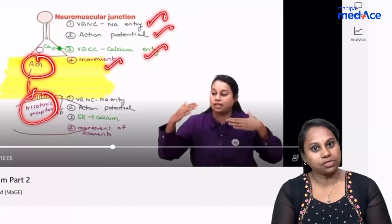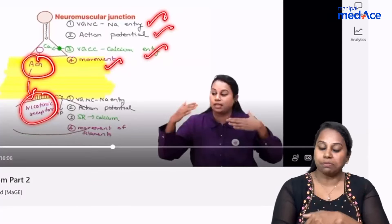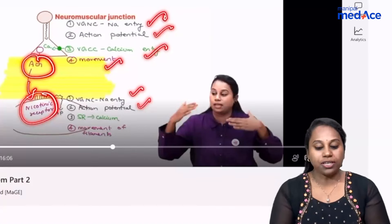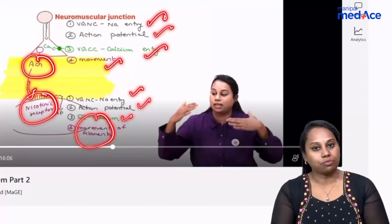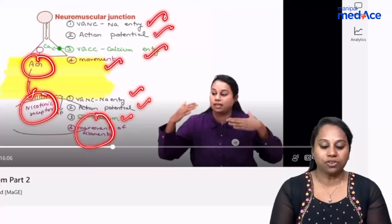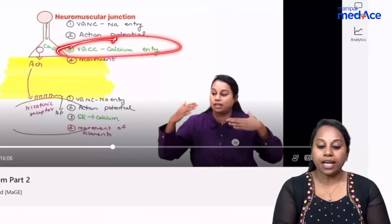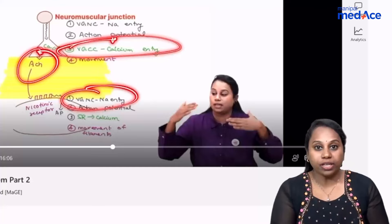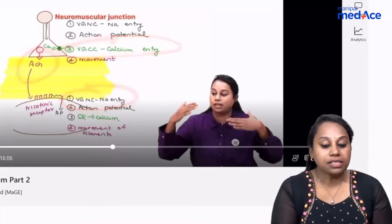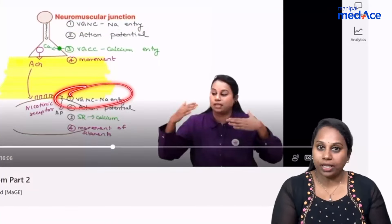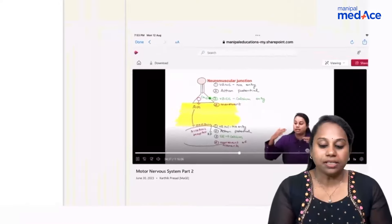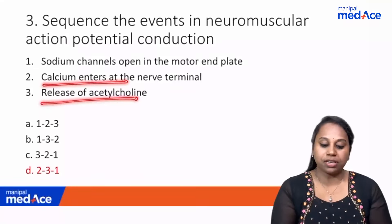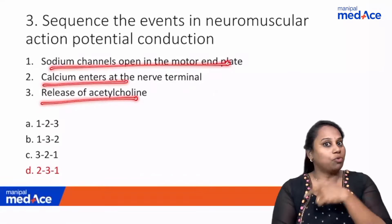Acetylcholine crosses the neuromuscular junction to bind to nicotinic receptors on the motor end plate. This causes opening of voltage-gated sodium channels on the motor end plate, and the SR releases calcium, causing movement of myofilaments actin and myosin, and the muscle contracts. The answer is option D: calcium entry first, followed by acetylcholine release, followed by sodium channel opening in the motor end plate.